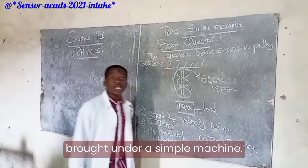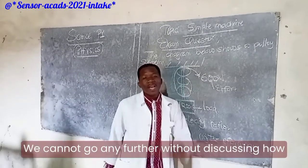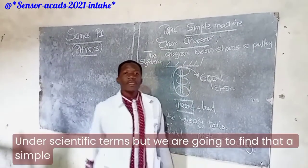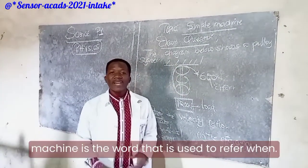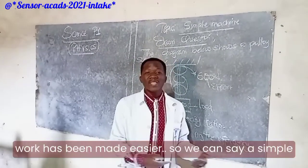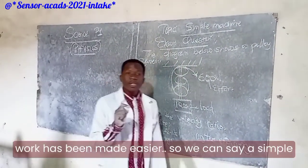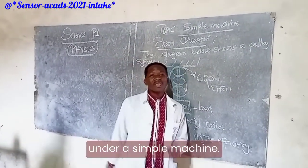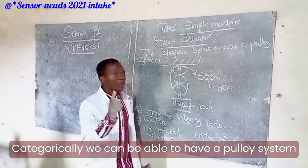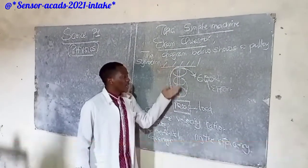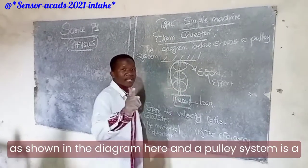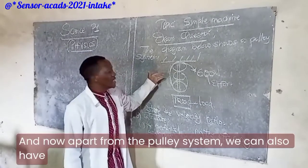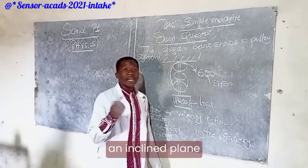We cannot go any further without discussing how best a simple machine can be described. A simple machine is a device that is used to make work easier. Under a simple machine, we can have a pulley system — a wheel with a grooved ring — and we can also have an inclined plane.